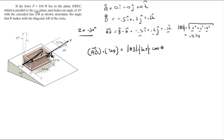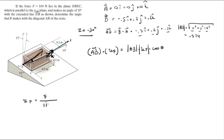The unit vector of F is this vector right here with a magnitude of 1 pointing in the direction of F, and it's very easily found. The unit vector F is equal to F divided by the magnitude of F.